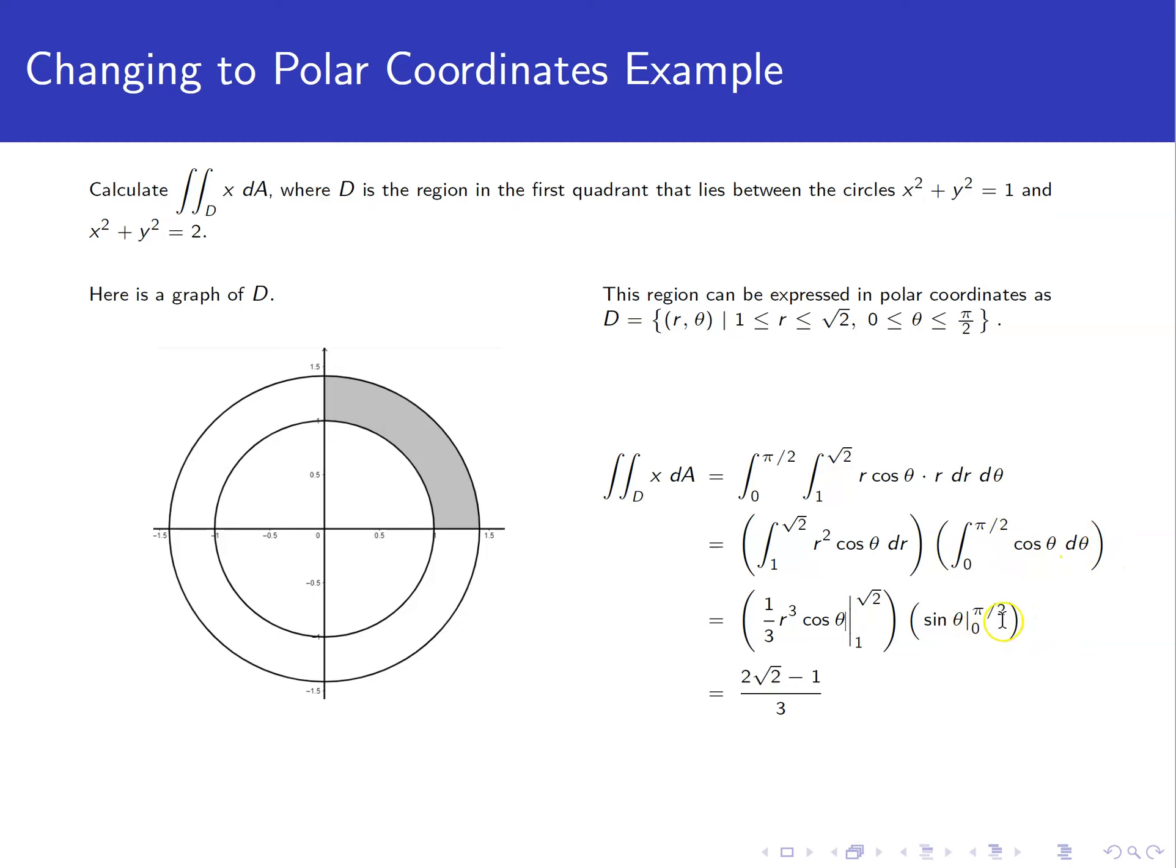Antiderivative for cosine is just sine. Plug in 0 to pi over 2, we get 1 for that integral. Over here, antiderivative for r squared is 1 third r cubed. We plug in root 2 and plug in 1, we'll get 2 root 2 minus 1 all over 3.